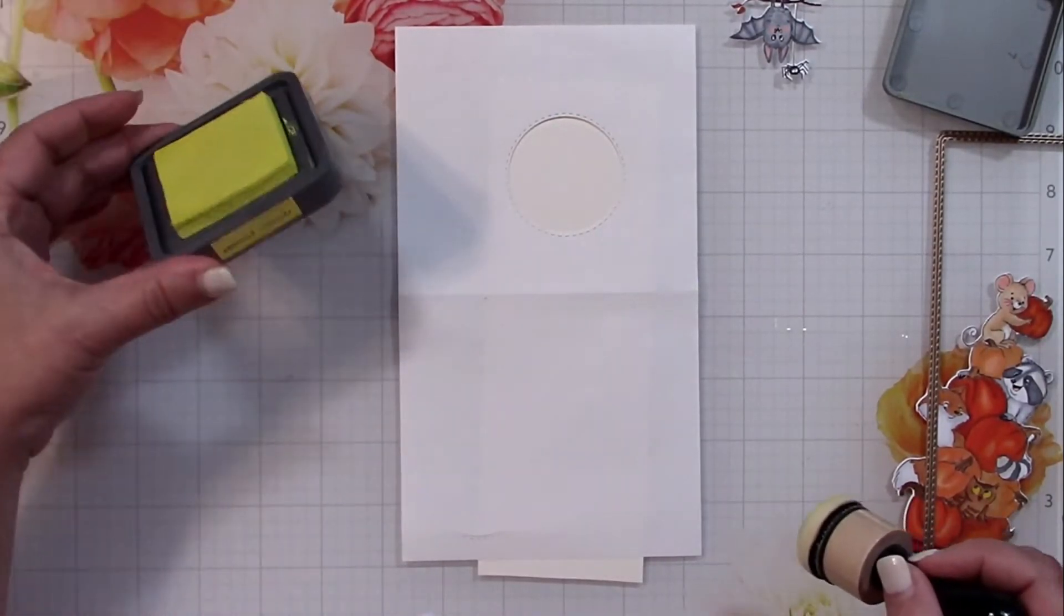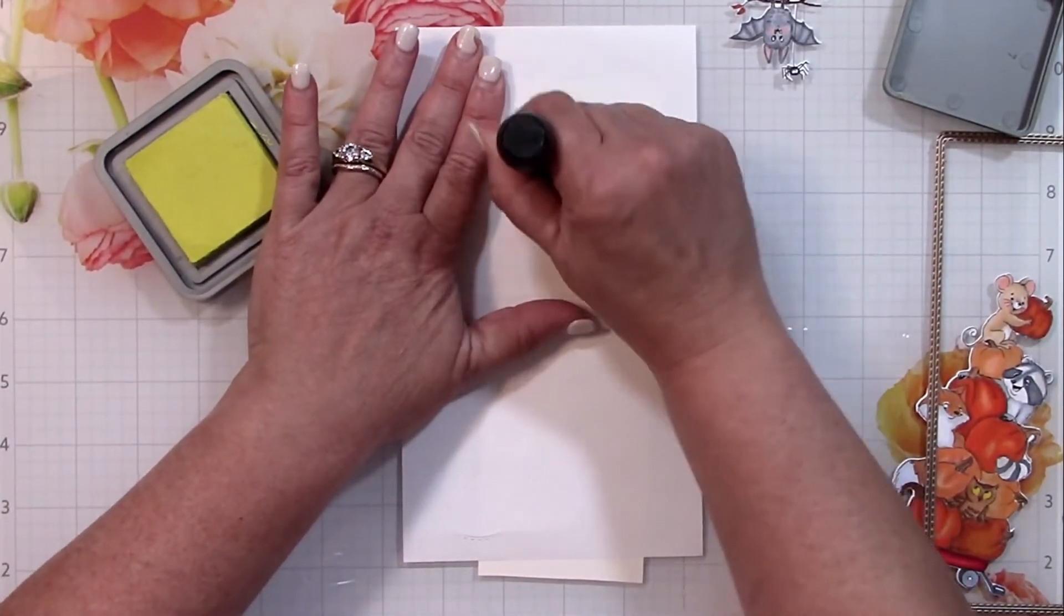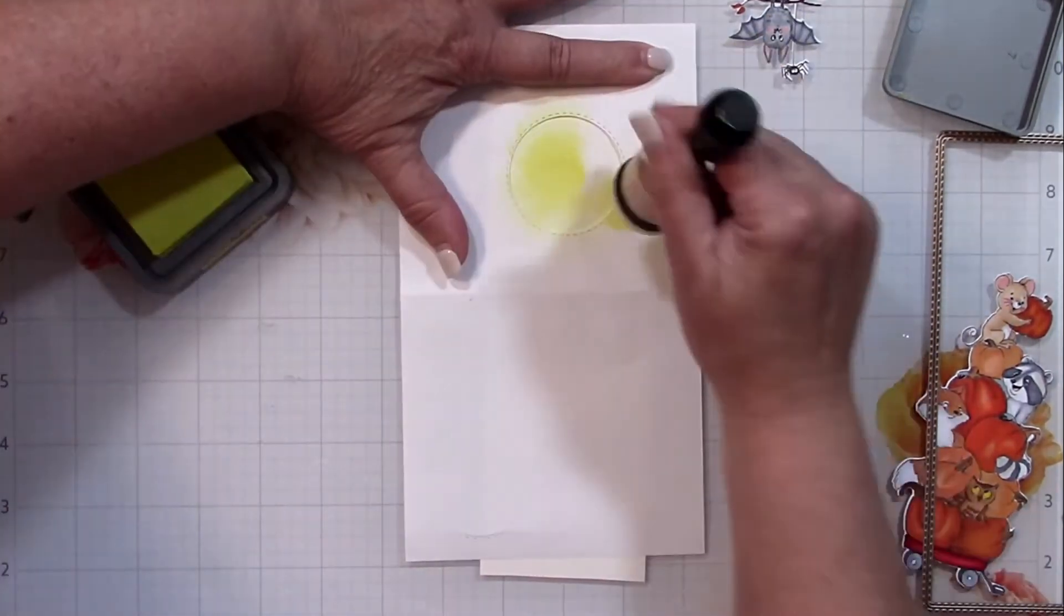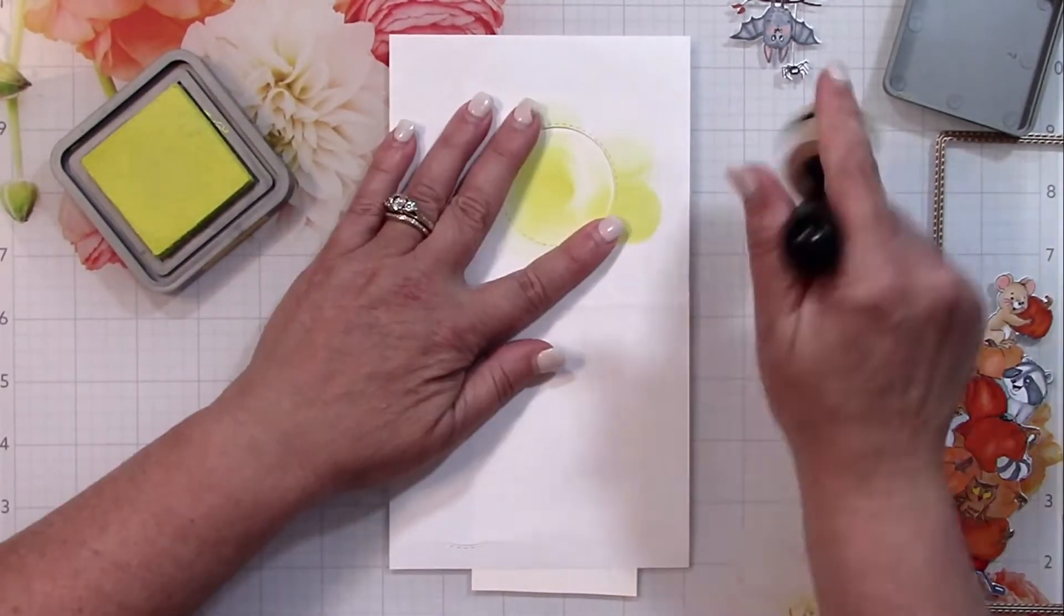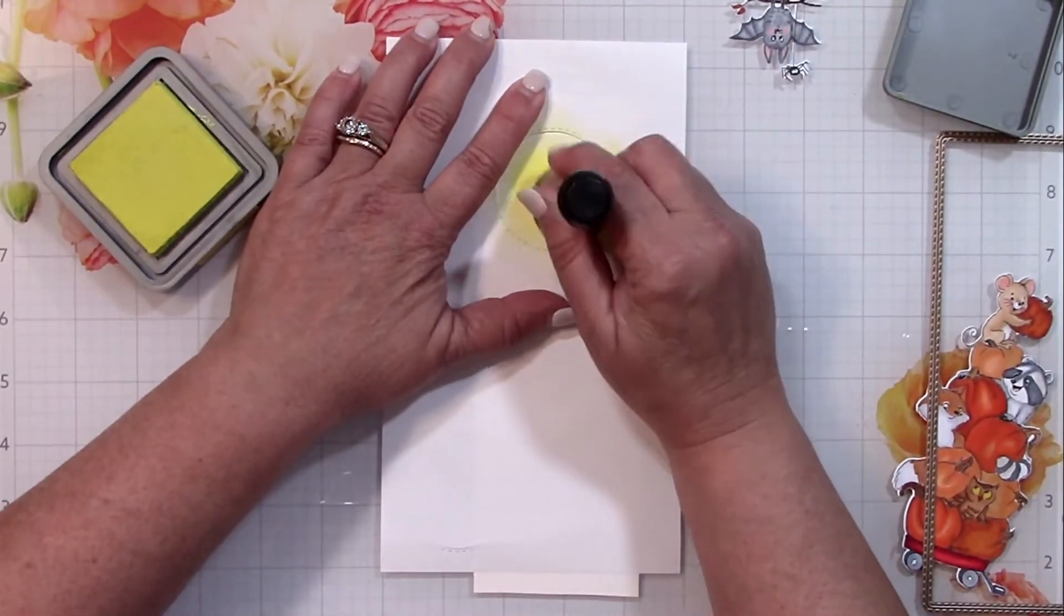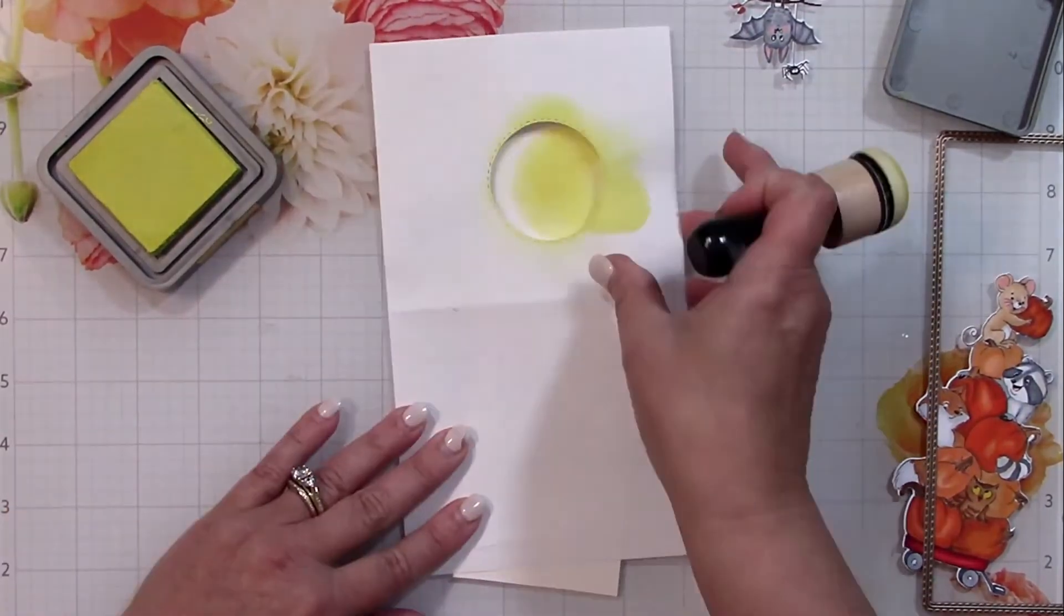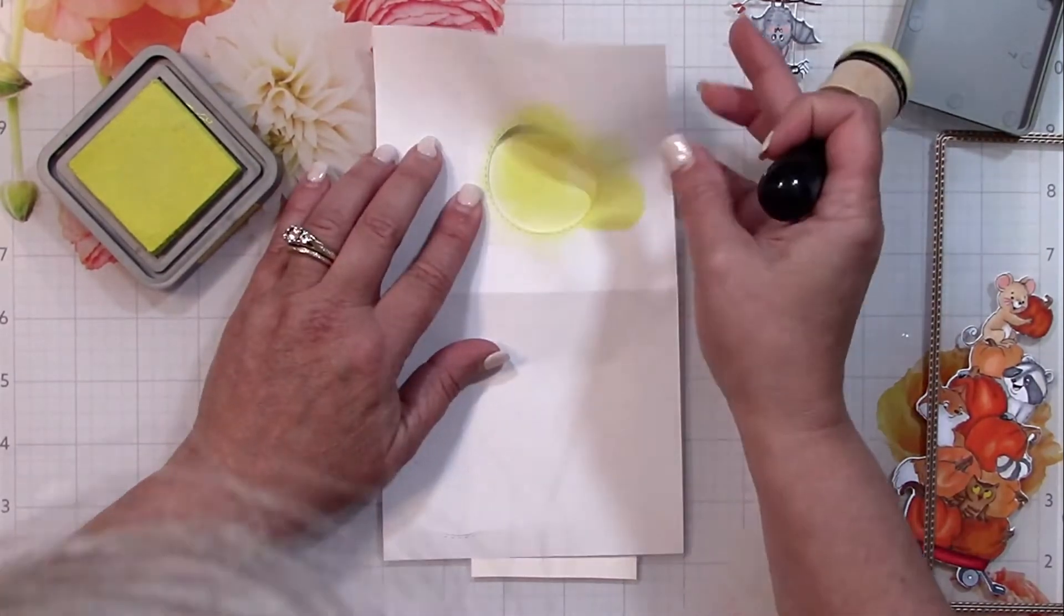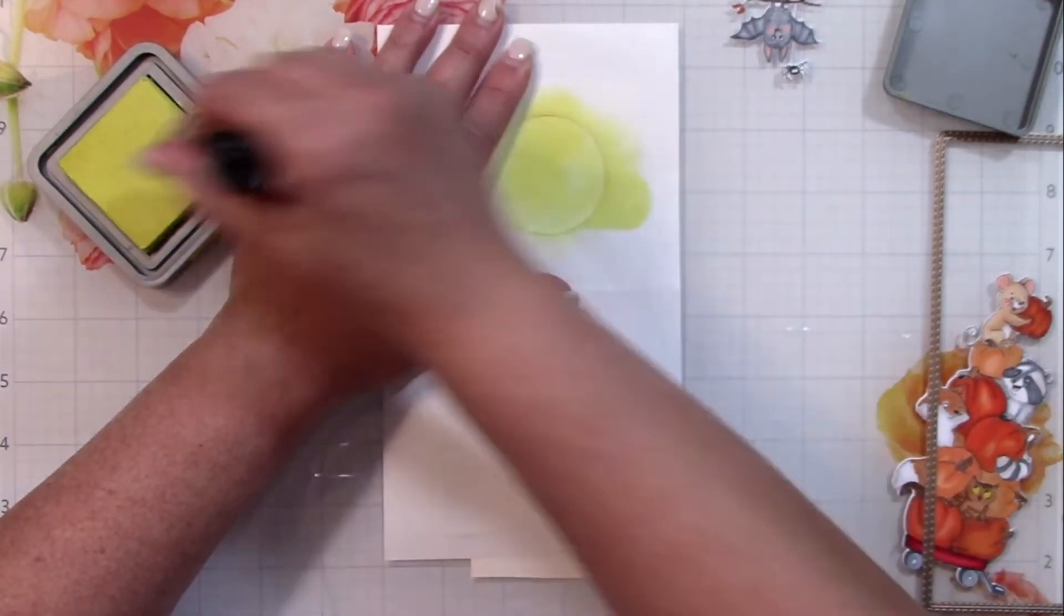It probably would have worked a little better if I had, and you're going to see how it's going to try to move around on me. But the truth is, once I get this yellow color down, I'm going to be putting that mask that I made with the Tombow two-way glue behind it on top of this yellow area that I've created.